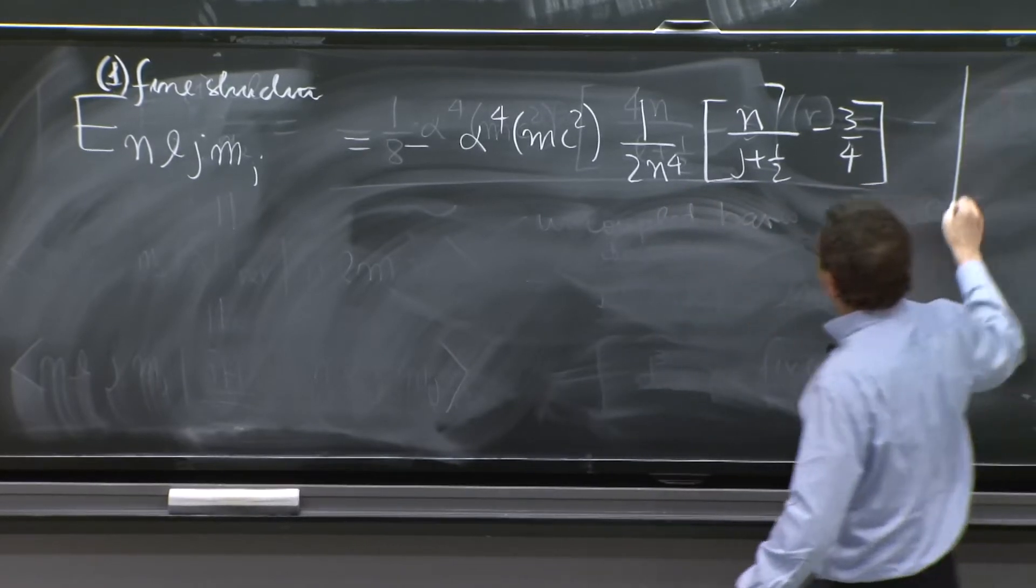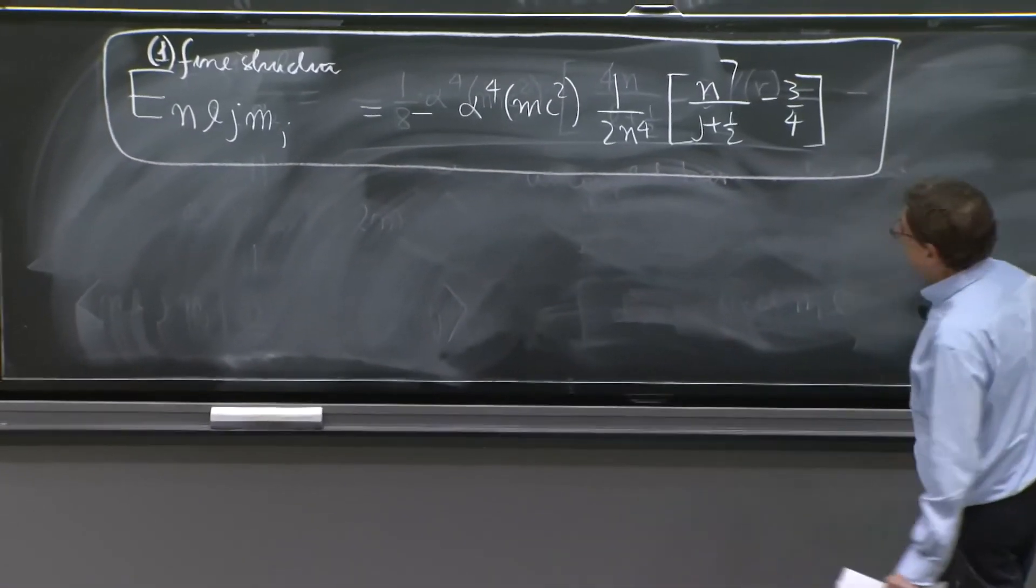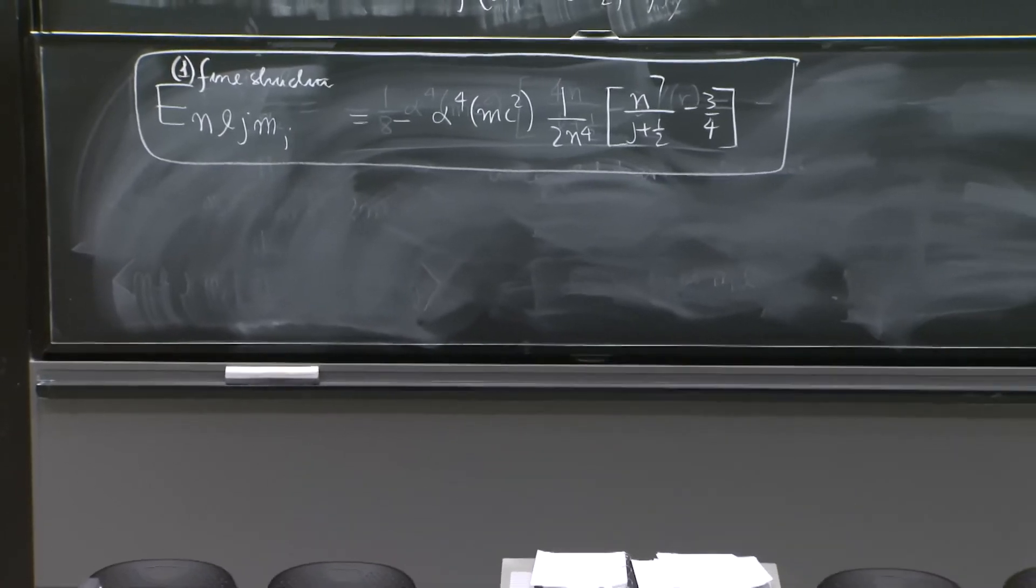Whole answer. All together. Darwin, fine, spin orbit, and relativistic.